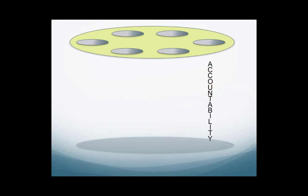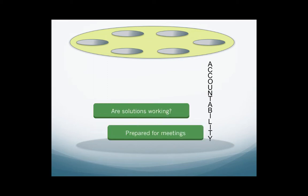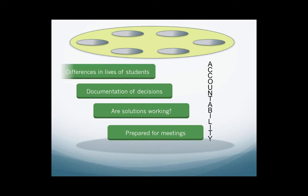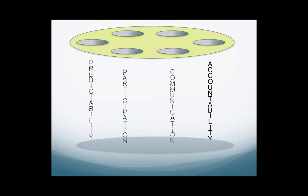Accountability is a final essential aspect of effective meetings and includes team members being prepared for meetings, ongoing evaluation of the efforts derived from team problem solving, a system to document team decisions, and assurance that efforts are focused on problem solving as a means of making a positive difference in the lives of students.